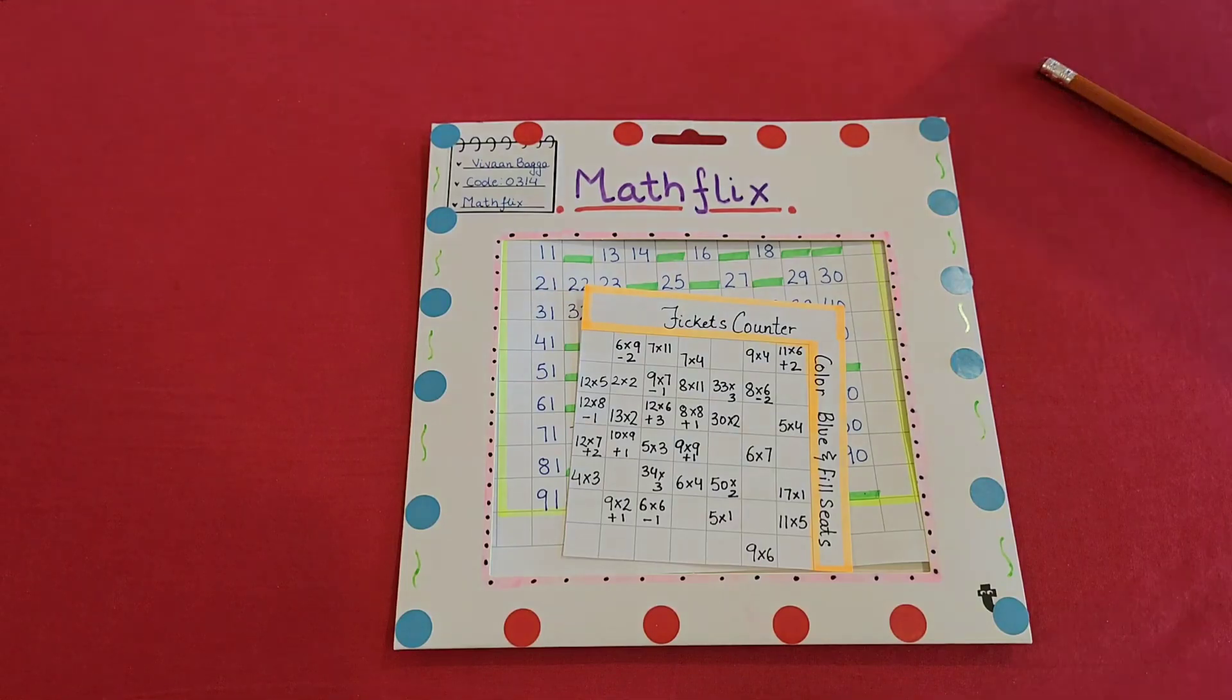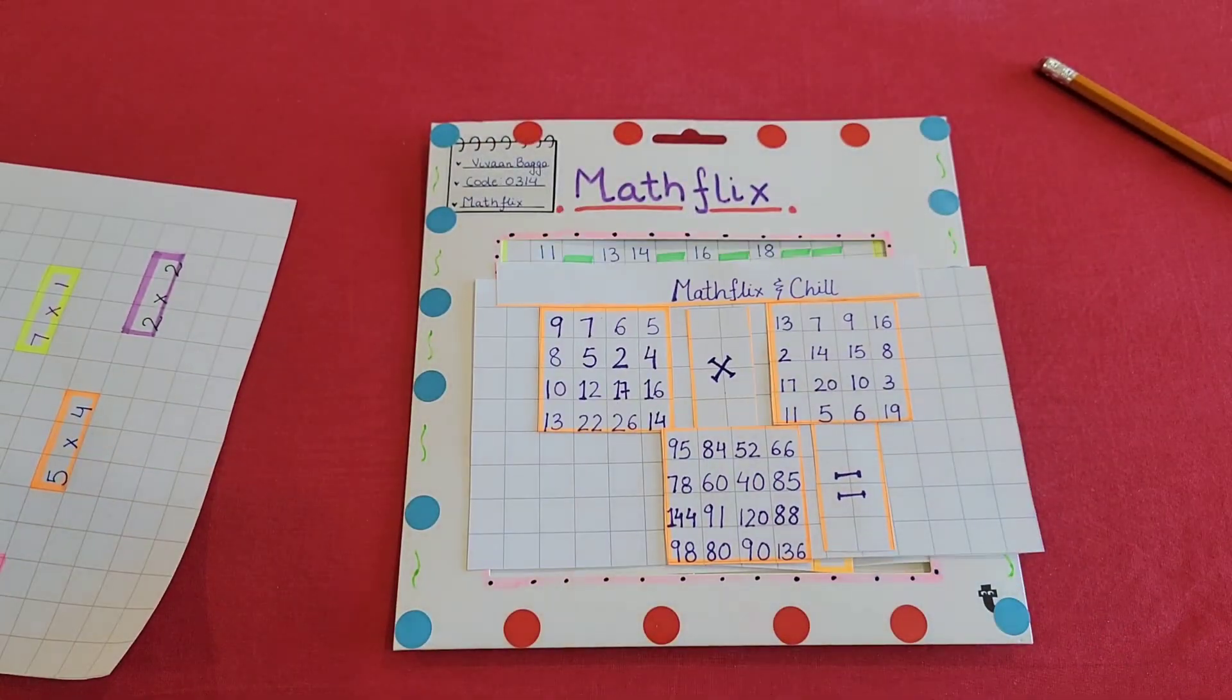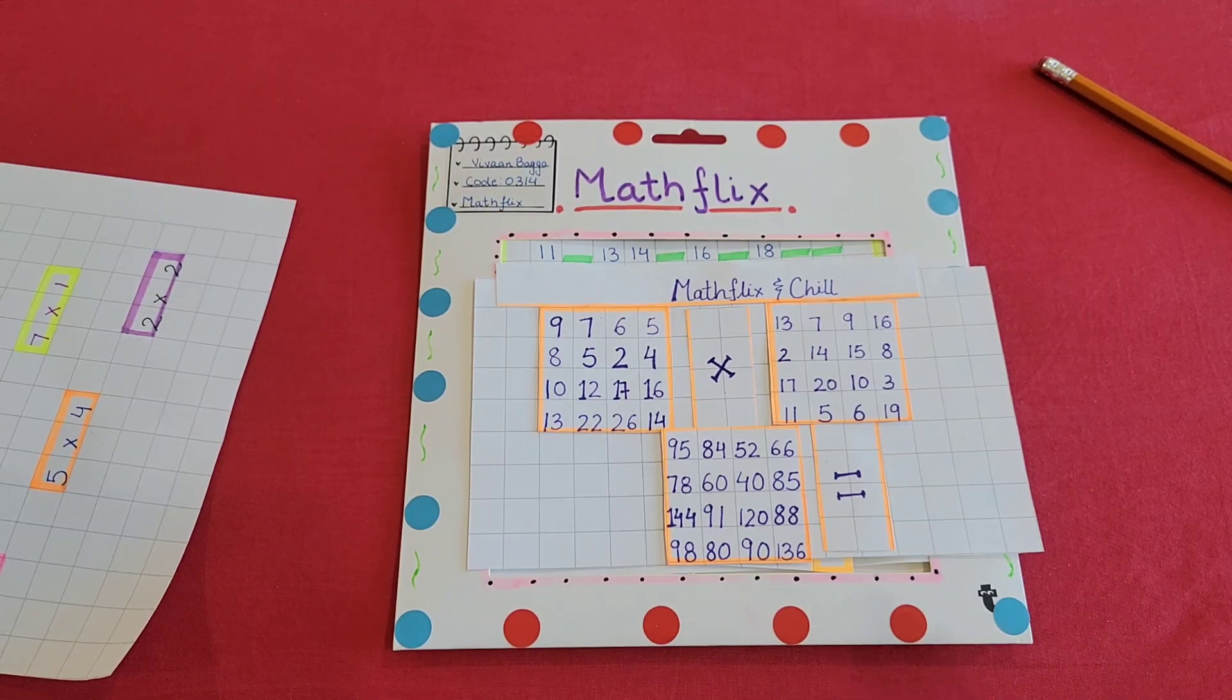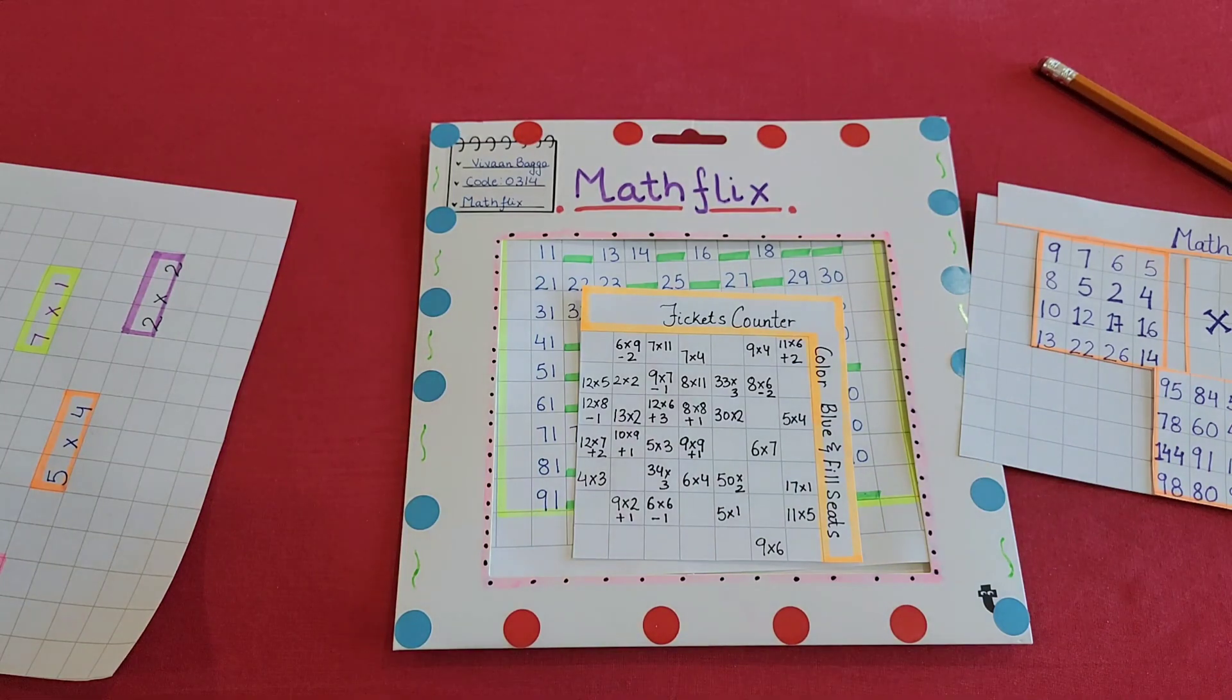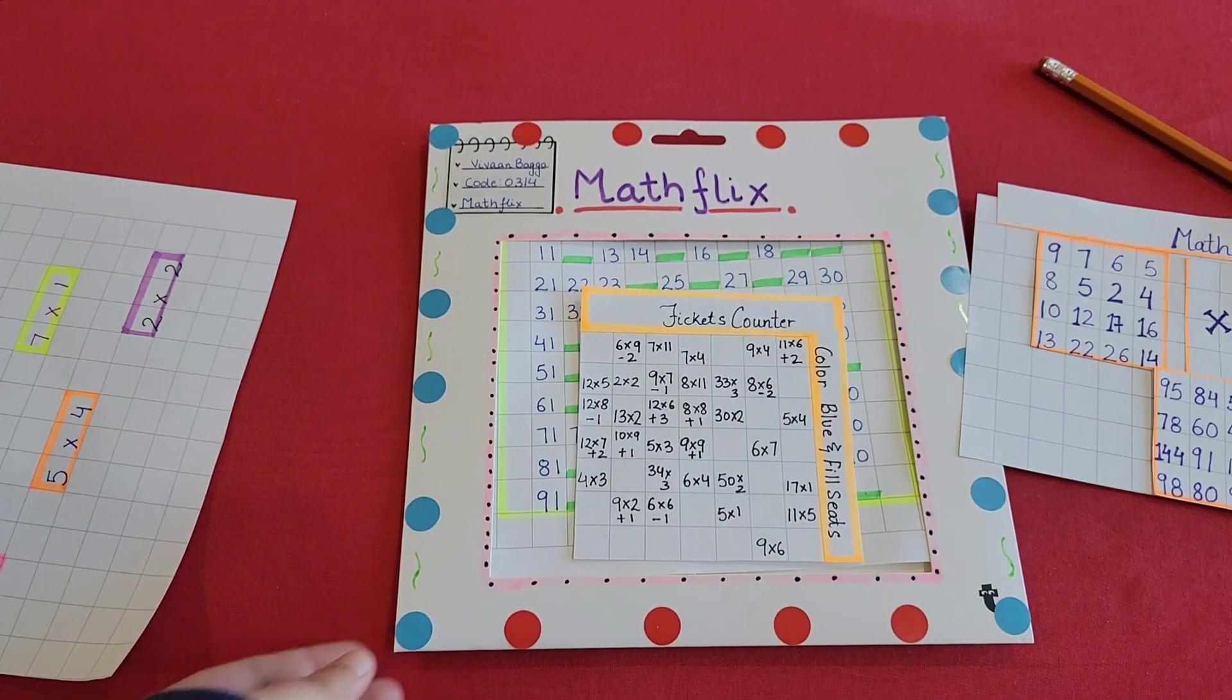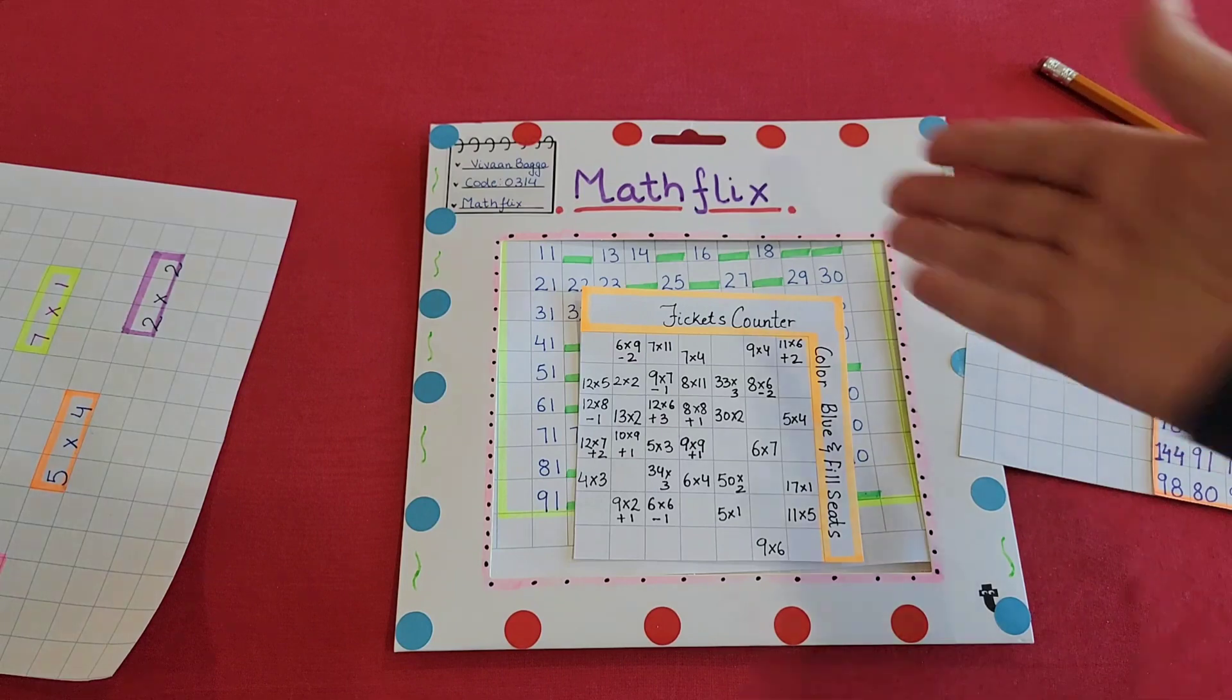So guys, these were the three very interesting, engaging activities that I created, something very easy and happy that the kids will be able to do. That's why I made it like in this way. All right, if you don't have this the outer one, that's absolutely all right. You could just use like a tape or just paste your activities on a colored paper and present it in such a way. You could write Math Flix on the top.